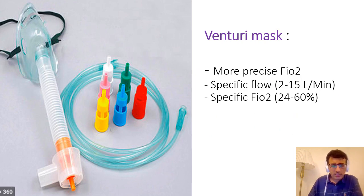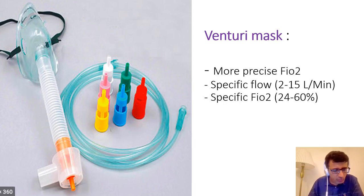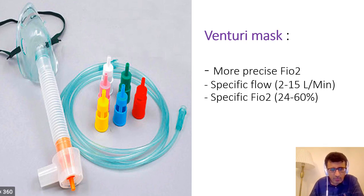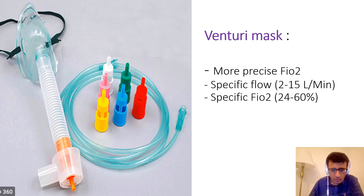The Venturi mask, utilizing the Bernoulli principle, gives the most precise FiO2. You can utilize it in cases where you need to give a specific FiO2 to control saturation, like in COPD patients. Different valves with different calibers each have a specific flow and give a specific FiO2 — with the largest (green) giving 60% at a flow of 15 L/min, and the smallest (blue) giving 24% at 2-3 L/min.